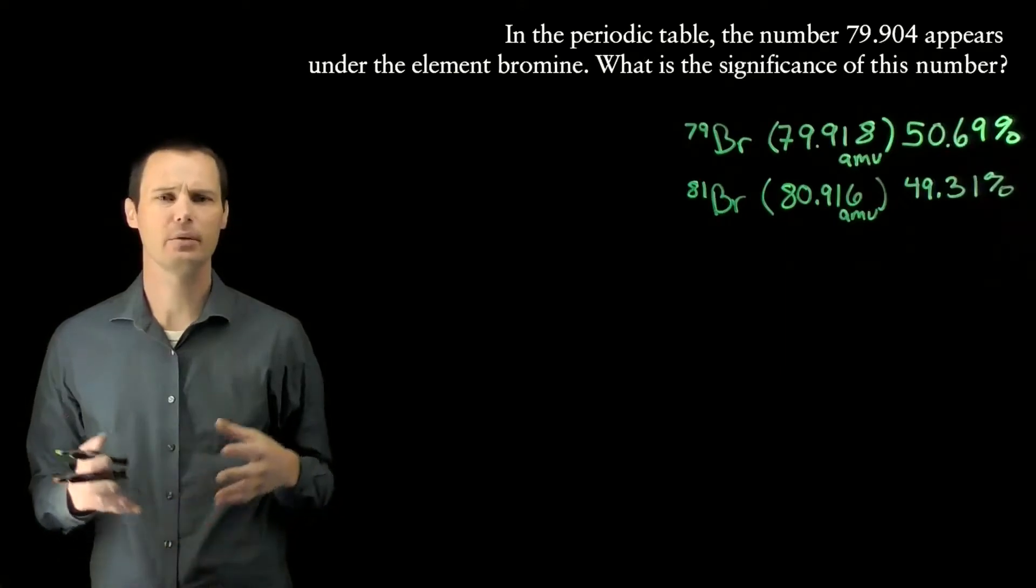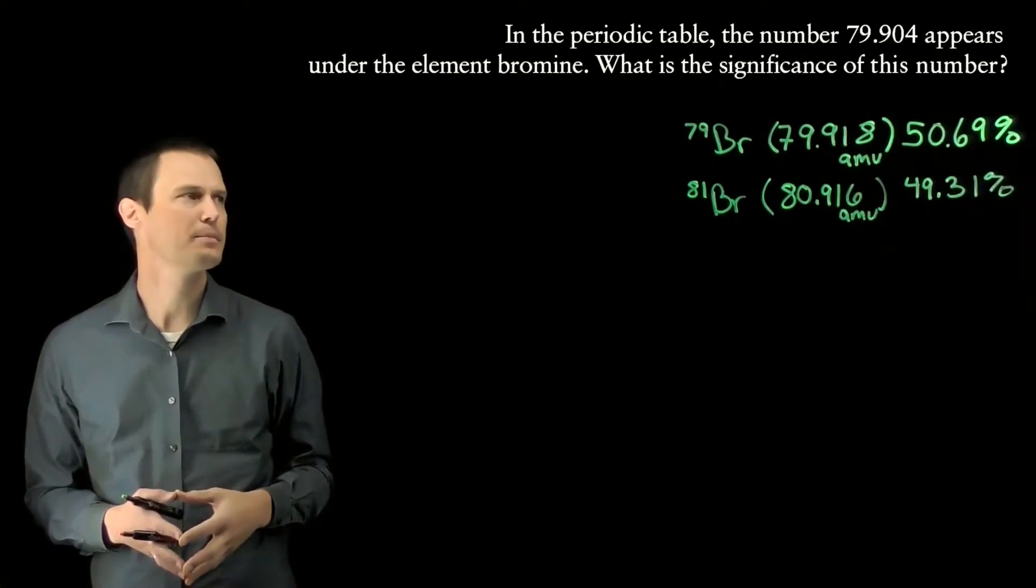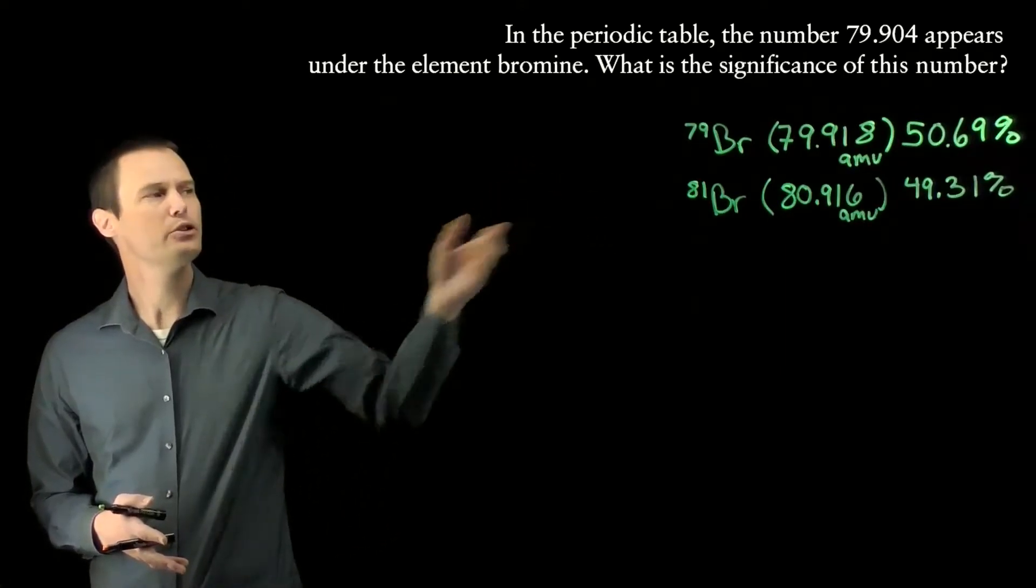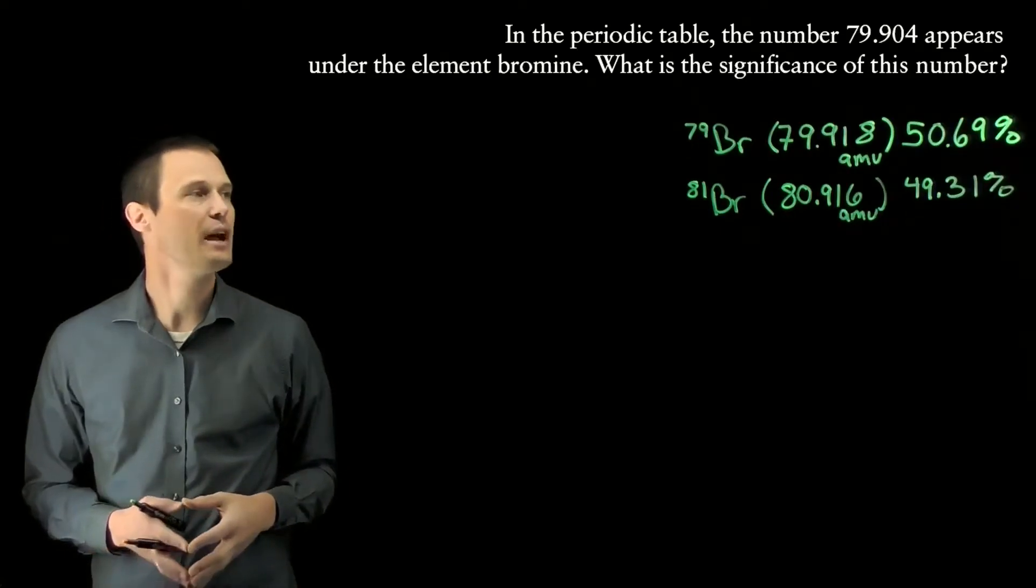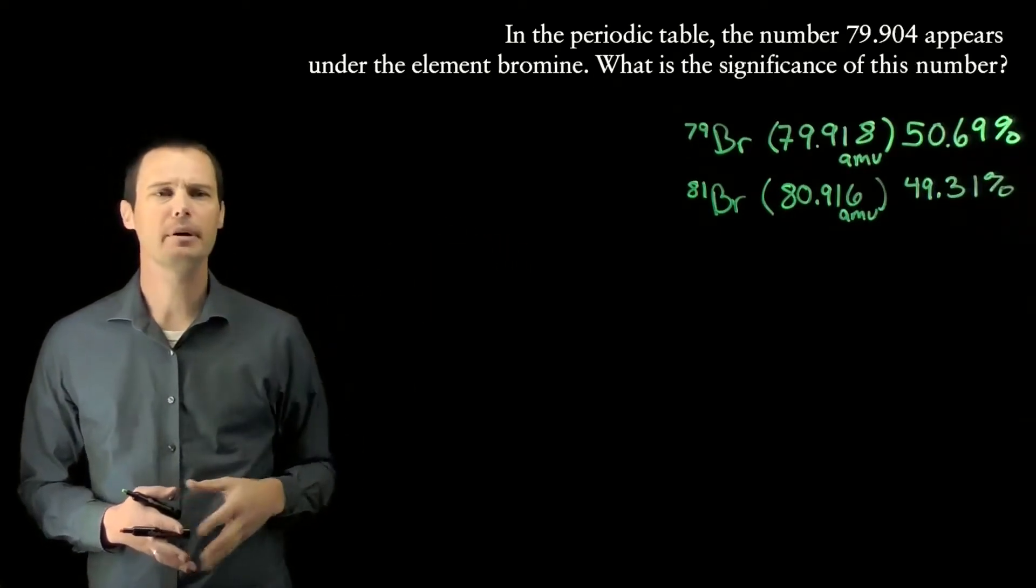So how do we get that atomic mass that we call the weighted average atomic mass? Bromine has two major naturally occurring isotopes, bromine-79 and bromine-81, and they're both about equally abundant.